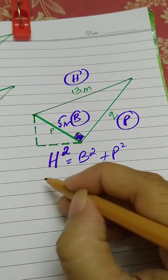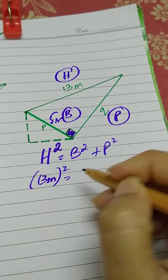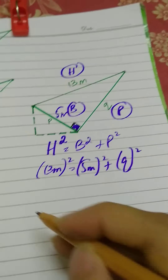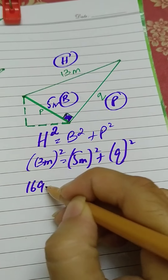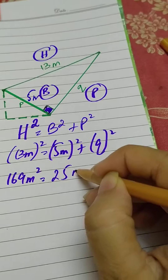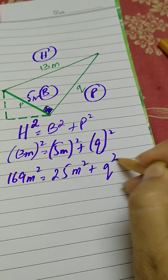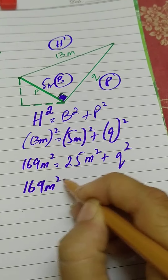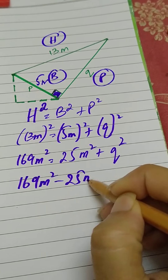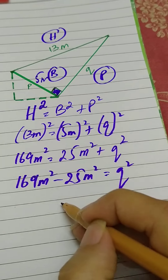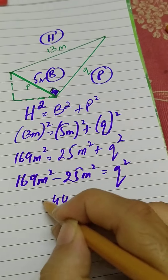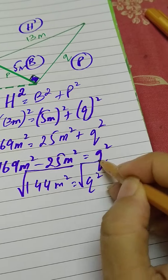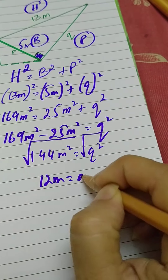For the larger triangle, the hypotenuse is 13 meters, the base is 5 meters, and the perpendicular is q. So: 13² = 5² + q², which gives 169 = 25 + q². Shifting 25 to the other side: q² = 169 − 25 = 144 square meters. Taking the square root of both sides, q = 12 meters.